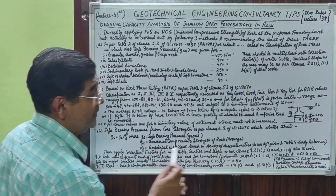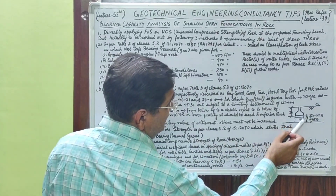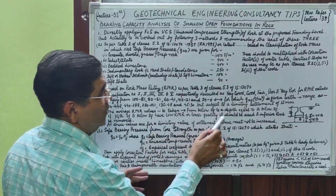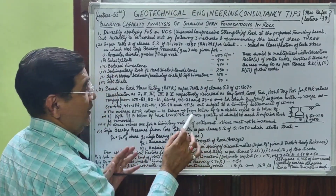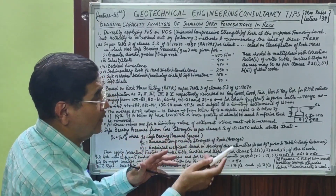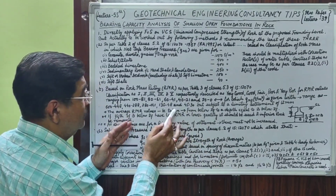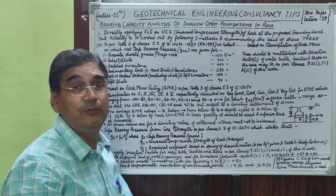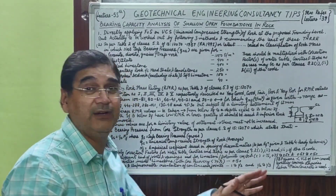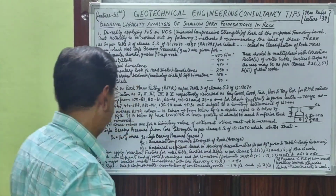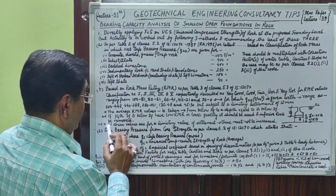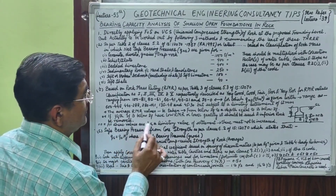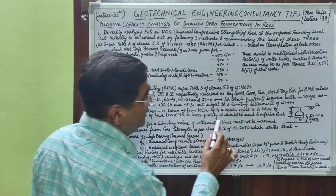If in the top one-fourth of the influence zone you are encountering low RMR values or lower quality rock, the inferior rock should be removed before laying the foundation for that structure. These values are for the limiting settlement and cannot be increased.